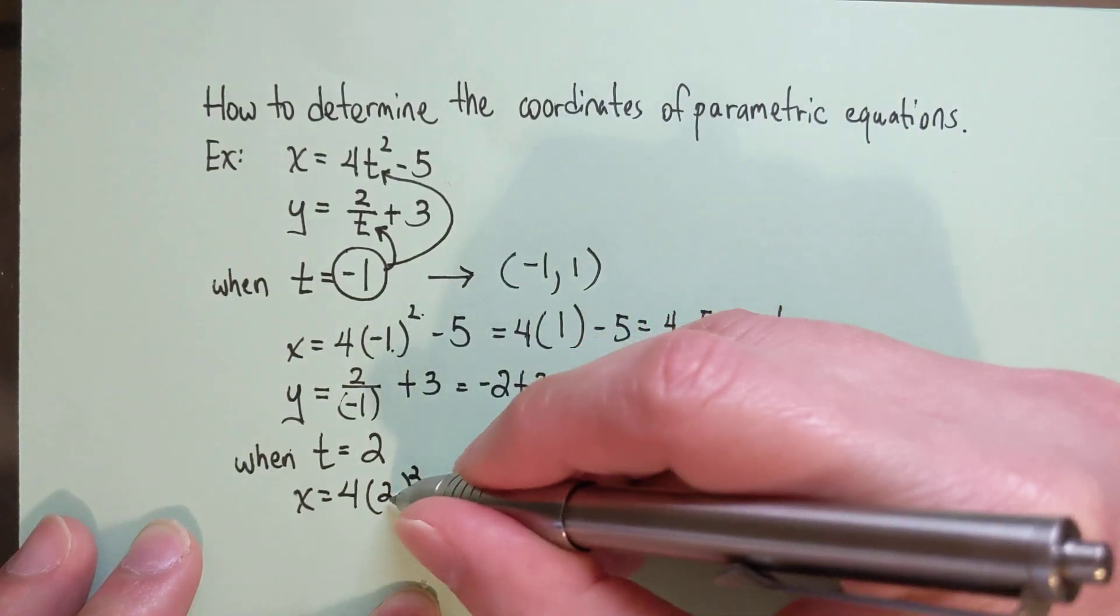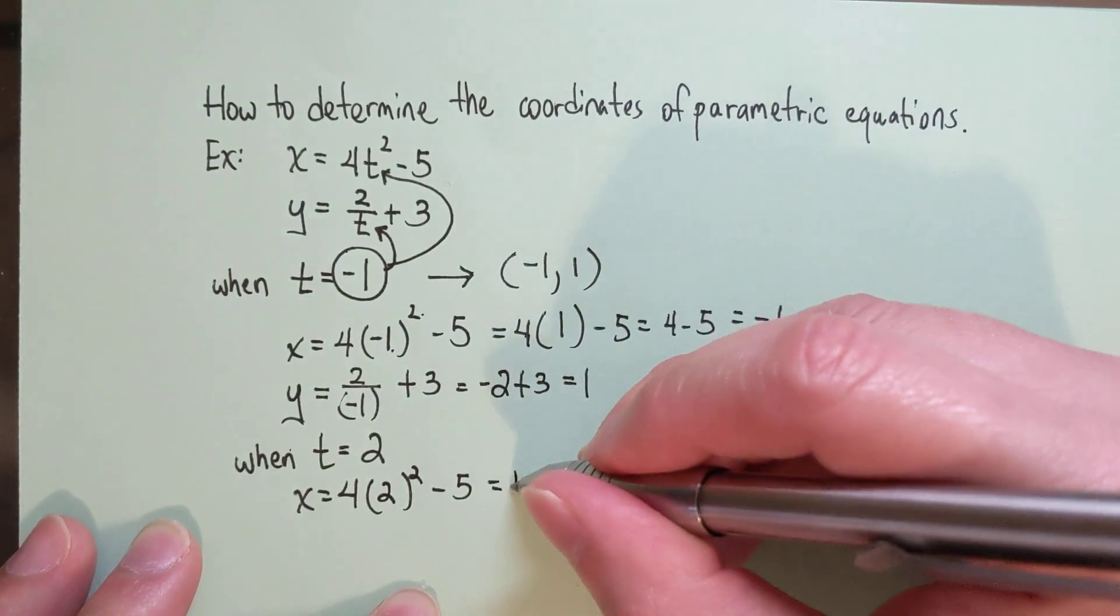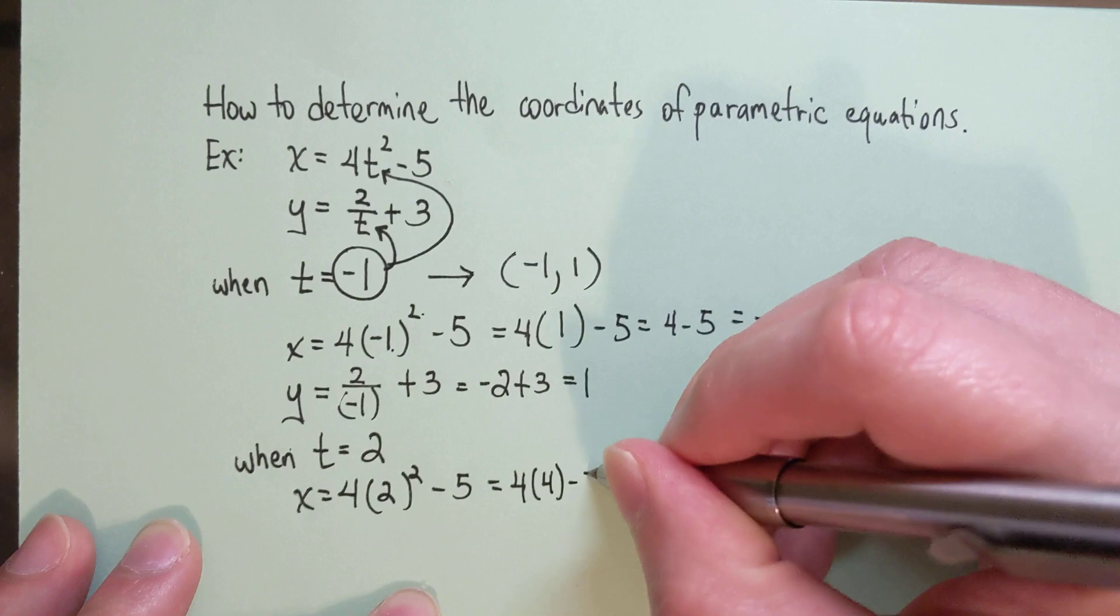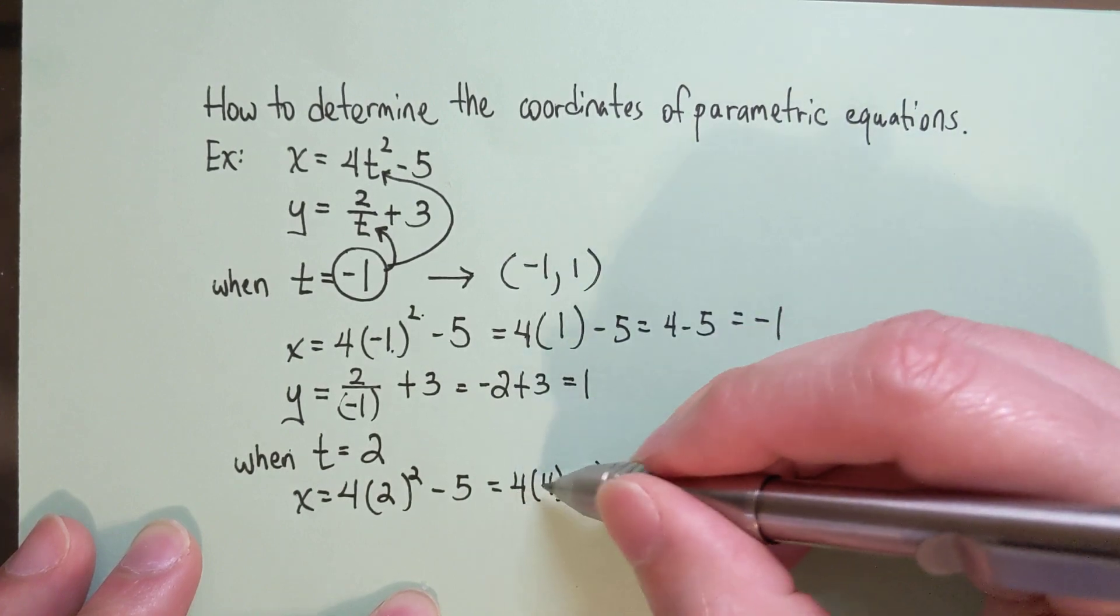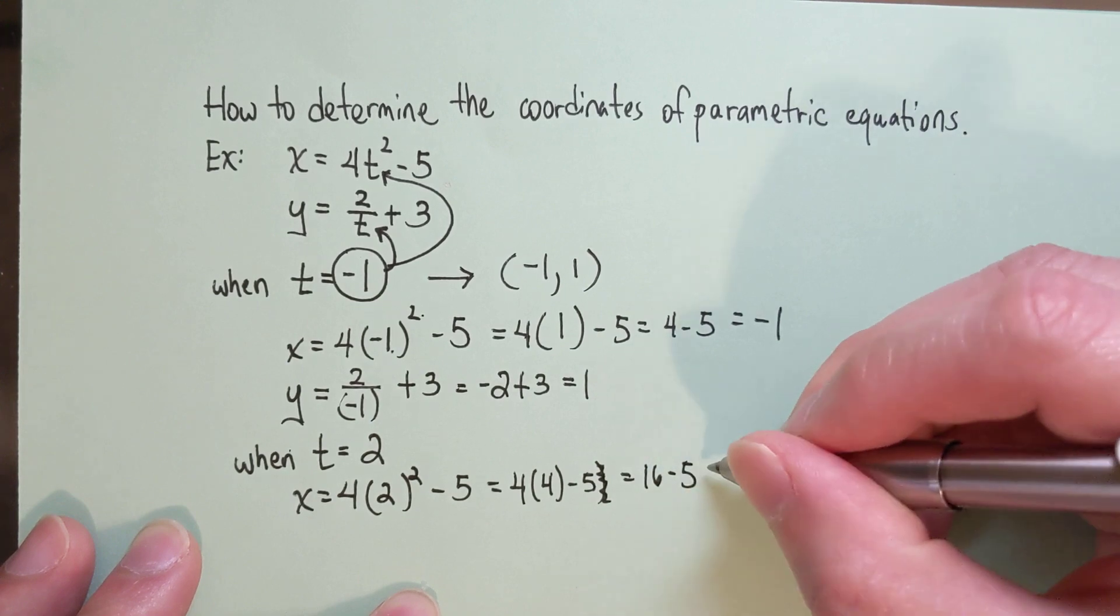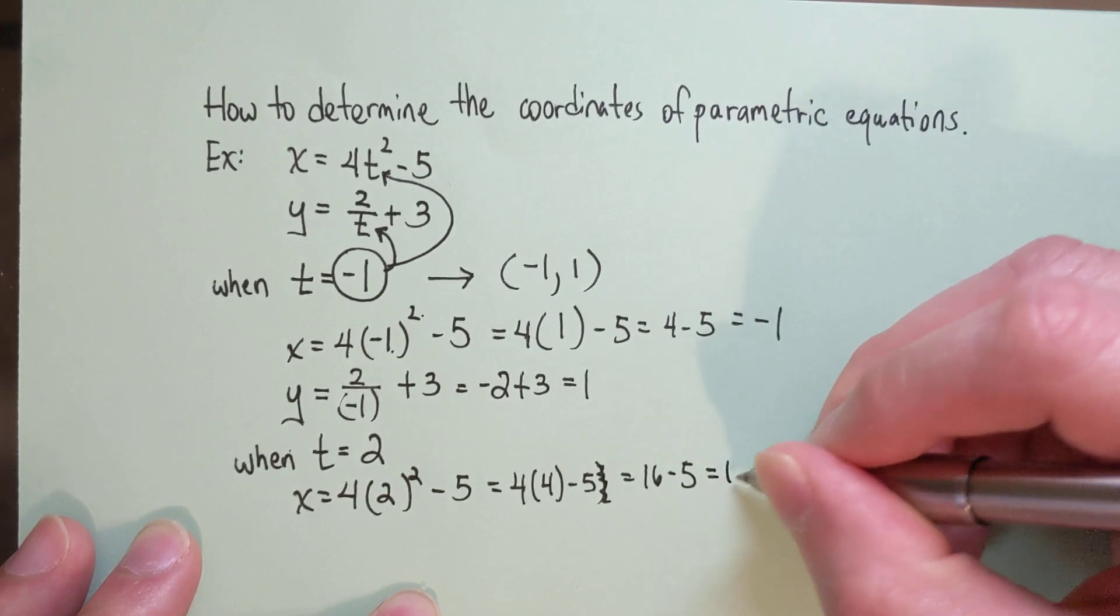So first you have to square it. 2 squared is 4. 4 times 4 is 16, and 16 minus 5 would be 11.